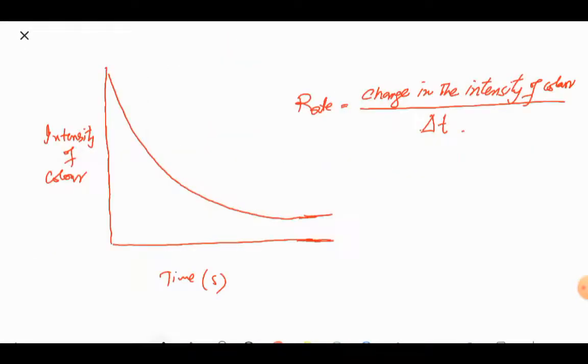And we can draw a graph of intensity of color against time, and the rate of reaction will be equal to change in the intensity of color divided by total time taken.